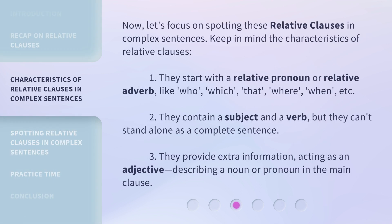Now, let's focus on spotting these relative clauses in complex sentences. Keep in mind the characteristics of relative clauses. First, they start with a relative pronoun or relative adverb, like who, which, that, where, when, etc. Second, they contain a subject and a verb, but they can't stand alone as a complete sentence. Third, they provide extra information, acting as an adjective, describing a noun or pronoun in the main clause.